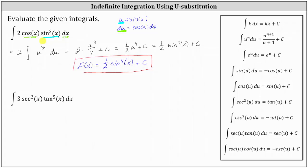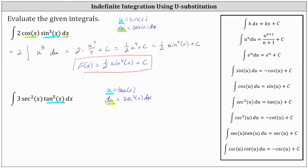Looking at the second example, we have the integral of three secant squared x times tangent to the fifth x dx. This is where it's helpful to know your derivative formulas. Since the derivative of tangent x is equal to secant squared x, we will let u equal tangent x. So if u is equal to tangent x, tangent to the fifth x is now equal to u to the fifth, and we're left with three secant squared x dx. The differential du is equal to the derivative of tangent x with respect to x times dx, which equals secant squared x dx — a perfect match. We can substitute du for secant squared x dx and factor out three.